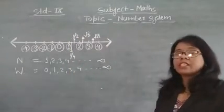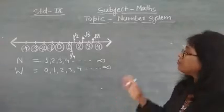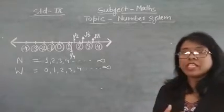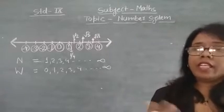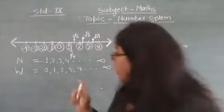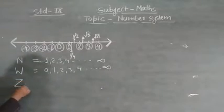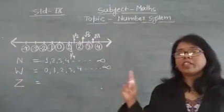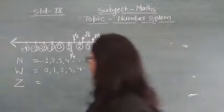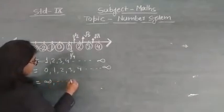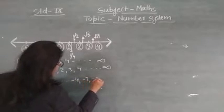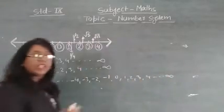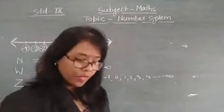Then the host tells that all the integers from the number line have been finished. Gia asks how, and the host explains that all whole numbers along with negative numbers are called integers. They go from negative infinity: ..., minus 4, minus 3, minus 2, minus 1, 0, 1, 2, 3, 4, ... to positive infinity.